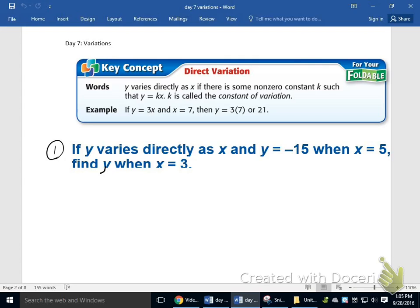So on the first problem, if y varies directly as x, and y equals negative 15 when x equals 5, then find y when x equals 3. The first thing we want to do is make a function to describe the situation, given this information right here.